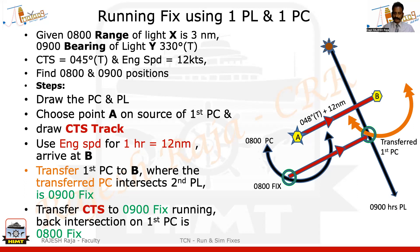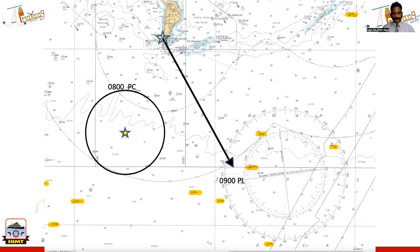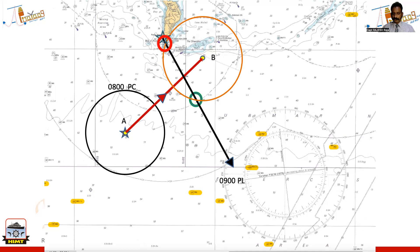On the chart, I'm using a hypothetical example with Bill of Portland as the second lighthouse. The first PC is drawn, and the second PL is drawn. Choose Alpha as the source of the first PC and run the CTS for one hour to arrive at Bravo. Transfer the first position circle to Bravo — there are two intersections. The red one is very close to land with shallow patches, so it is discarded. Taking the correct intersection and retracing back gives the eight o'clock fix, while the other is the ambiguity that is discarded.